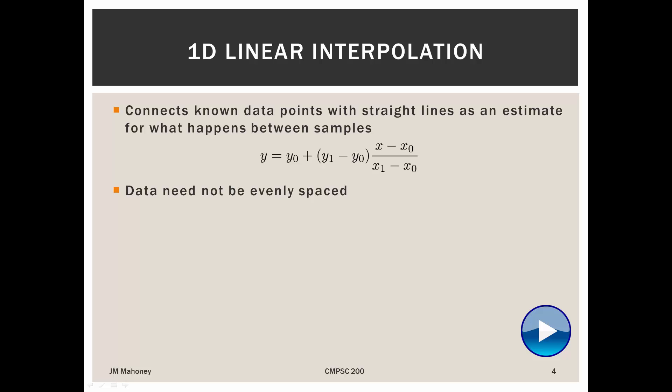Really all this is is a kind of fancy weighted average between the data points that we actually sampled. So the linear part, and we'll see this in the examples, we're just taking those two data points, we're drawing a straight line between them, and then we're seeing where on that line does our dependent variable lie, given what our independent variable is. On the next example, we'll see how this looks visually.